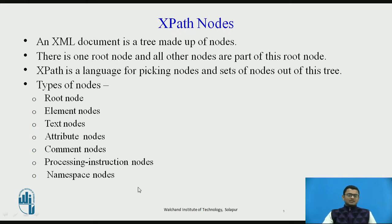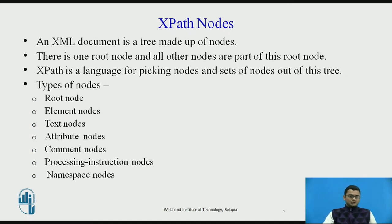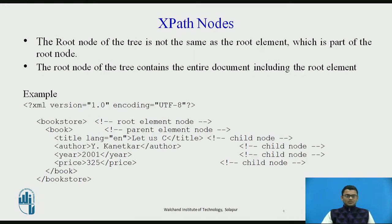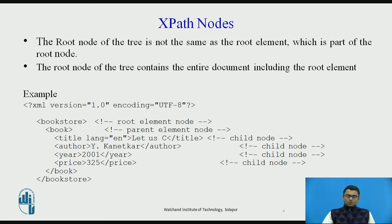These are the types of nodes that we have. The root node holds all the other nodes — the element nodes, the text nodes, attribute nodes and so on. The root node of the tree is not the same as the root element, which is part of the root node. The root element is part of the root node, whereas the root node holds the entire XML document.